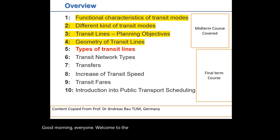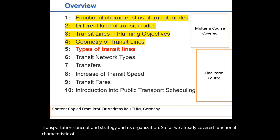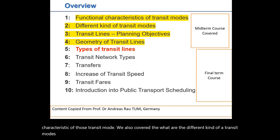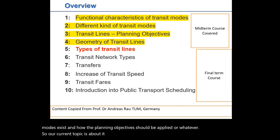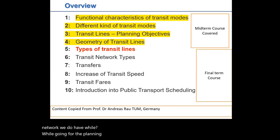Everyone, welcome to the next session of the subject: Urban and Suburban Transportation Concept and Strategy and its Organization. So far, we have already covered the functional characteristics of transit modes. We also covered what different kinds of transit modes exist and what the planning objectives should look like. Our current topic is about the different stages and types of transit networks we have while planning for transit.